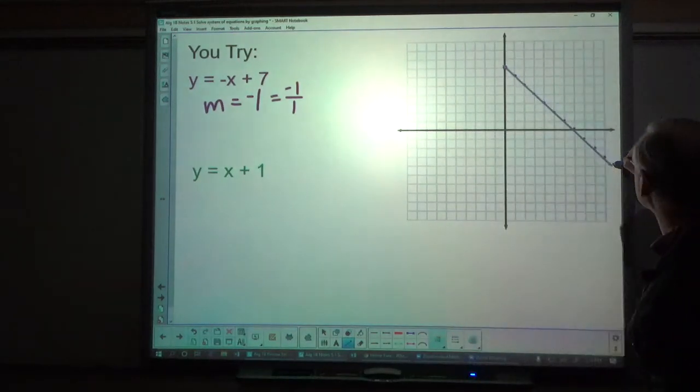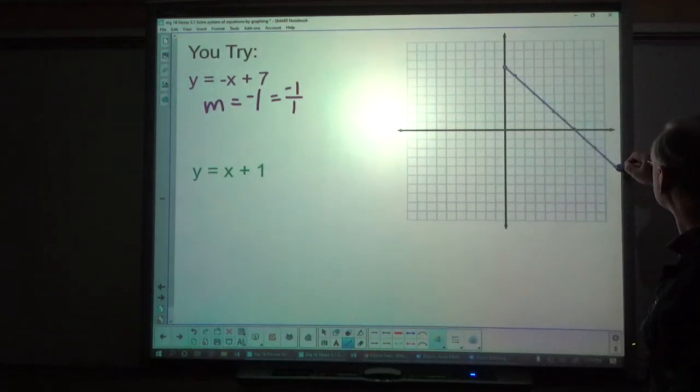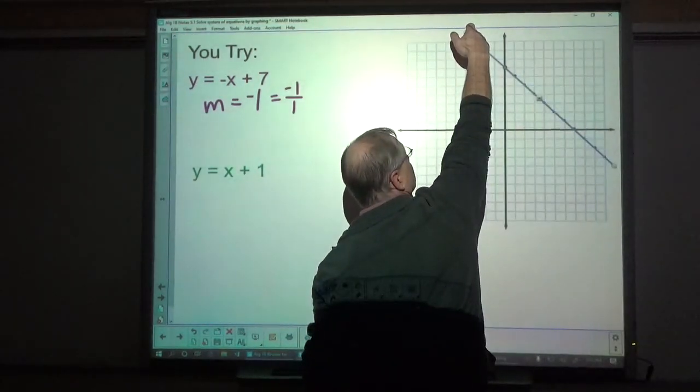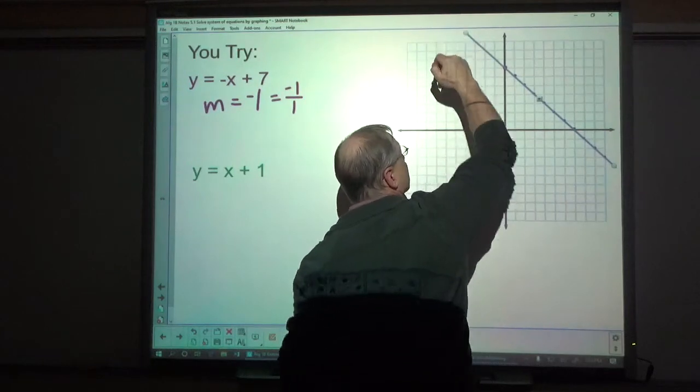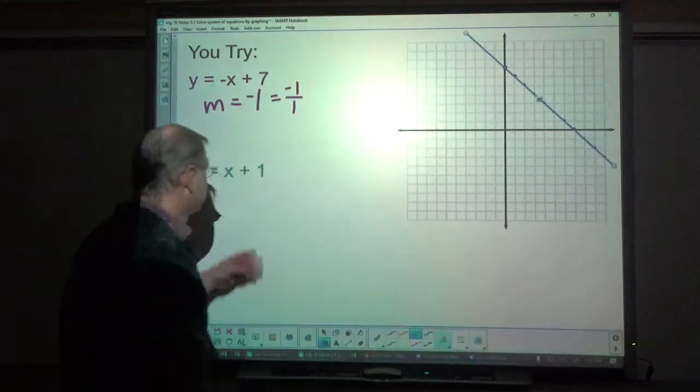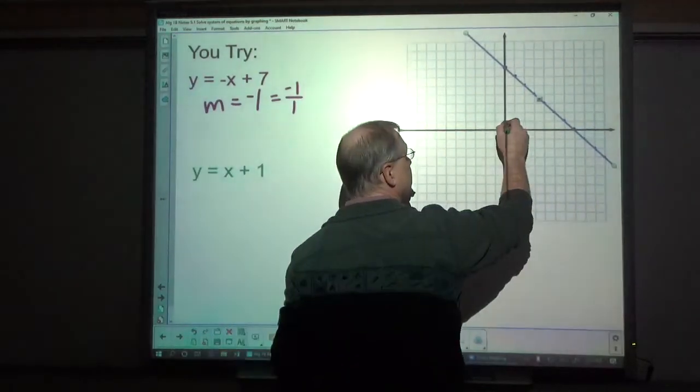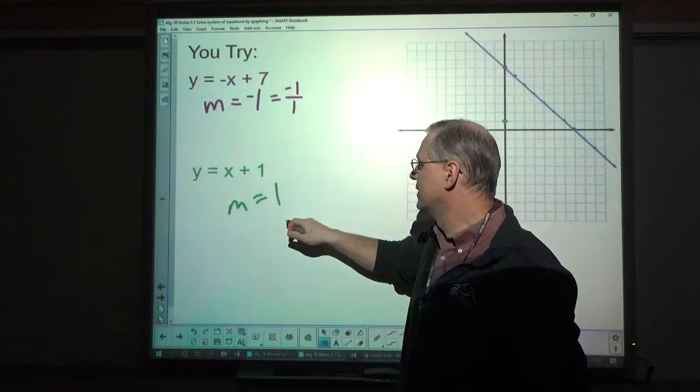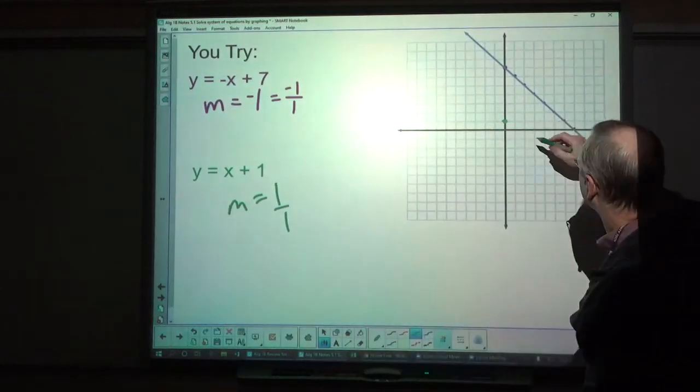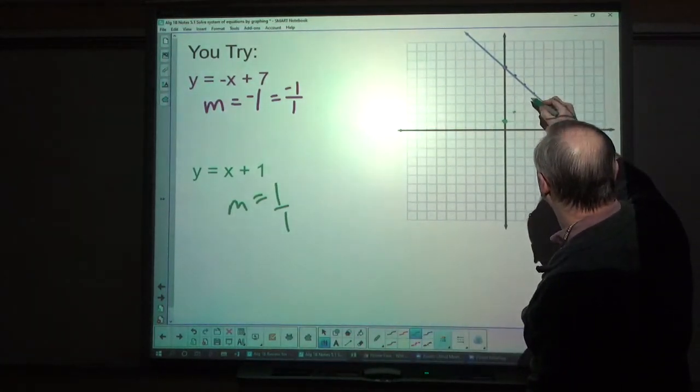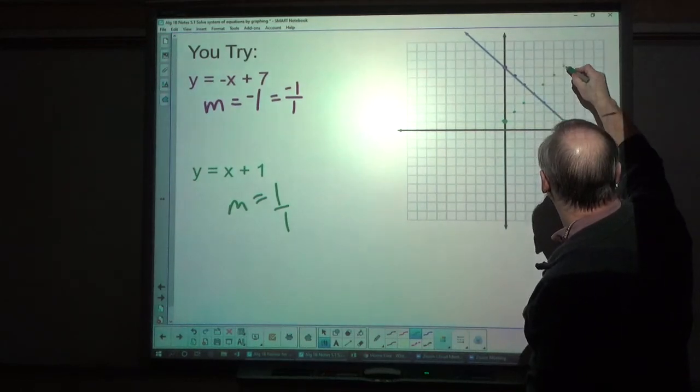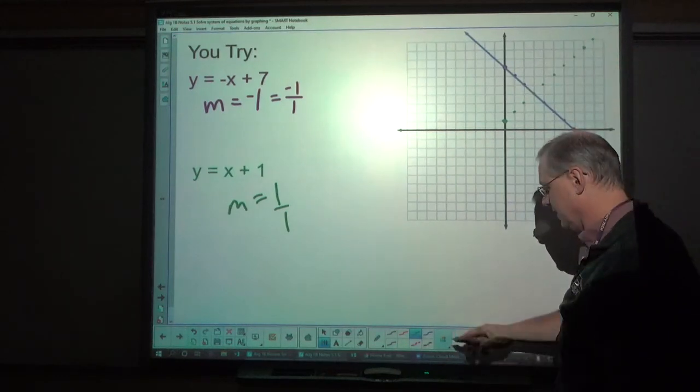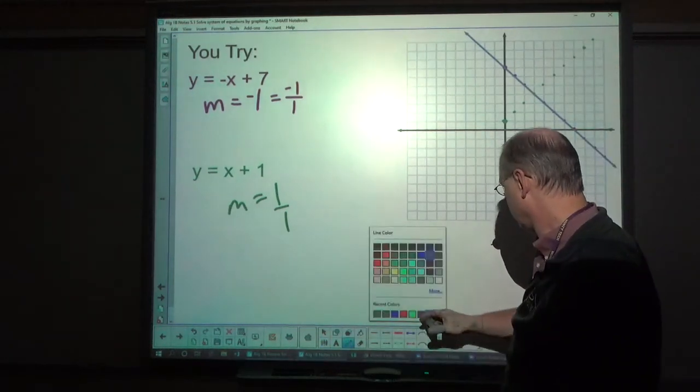Alright. Next I'm going to graph 1 for y-intercept. And then my slope here is 1, so that's like 1 over 1. Every time I go up 1, right 1. So now I'm going like this. Helps if you hit the exact spot. Alright, we'll graph that.